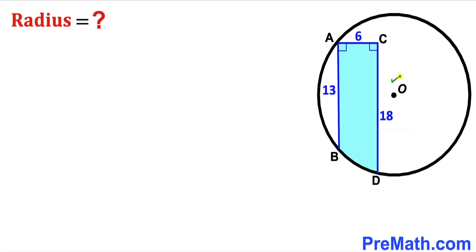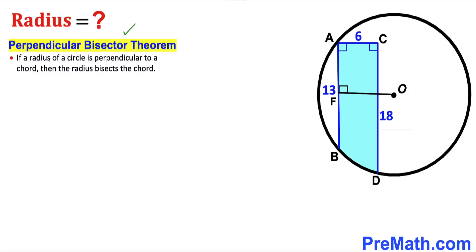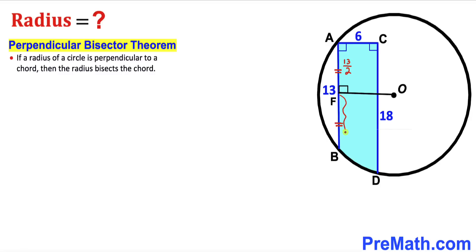I am going to drop a perpendicular from the center O onto chord AB. I have dropped perpendicular OF onto chord AB. Recalling the perpendicular bisector theorem: if a radius of a circle is perpendicular to a chord, then the radius bisects the chord. So OF bisects AB into two equal parts AF and BF, each equal to 13 divided by 2 units.